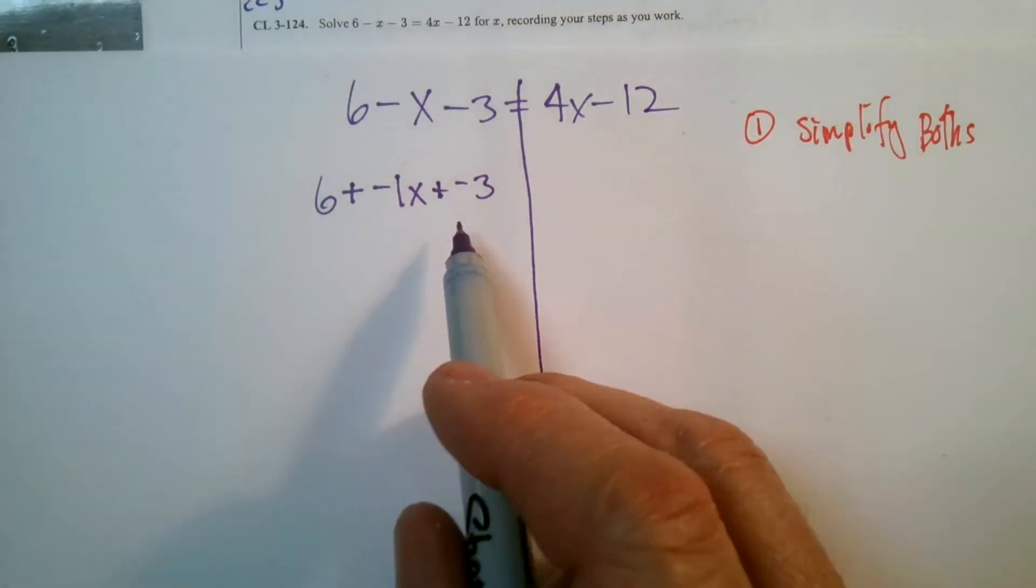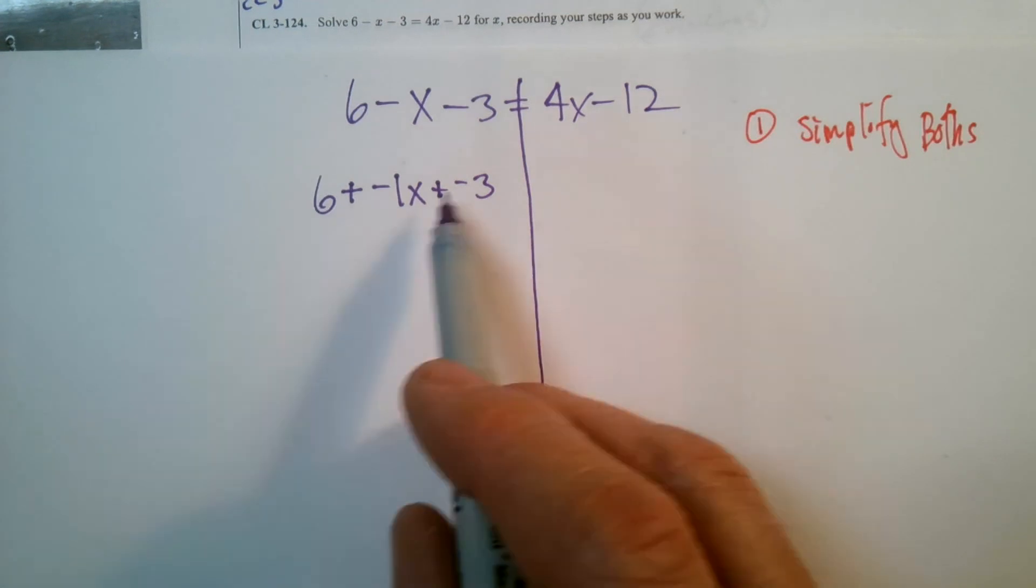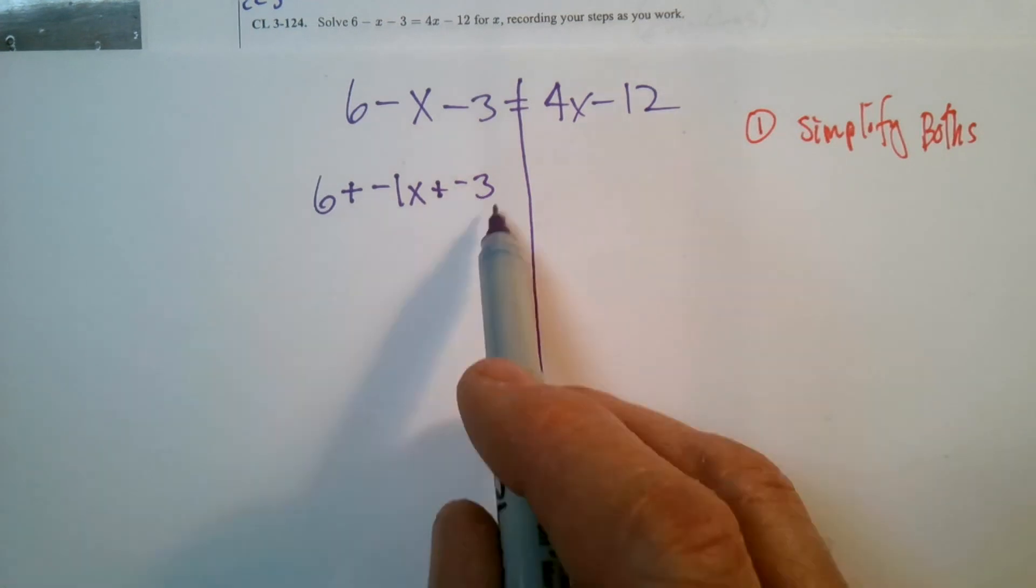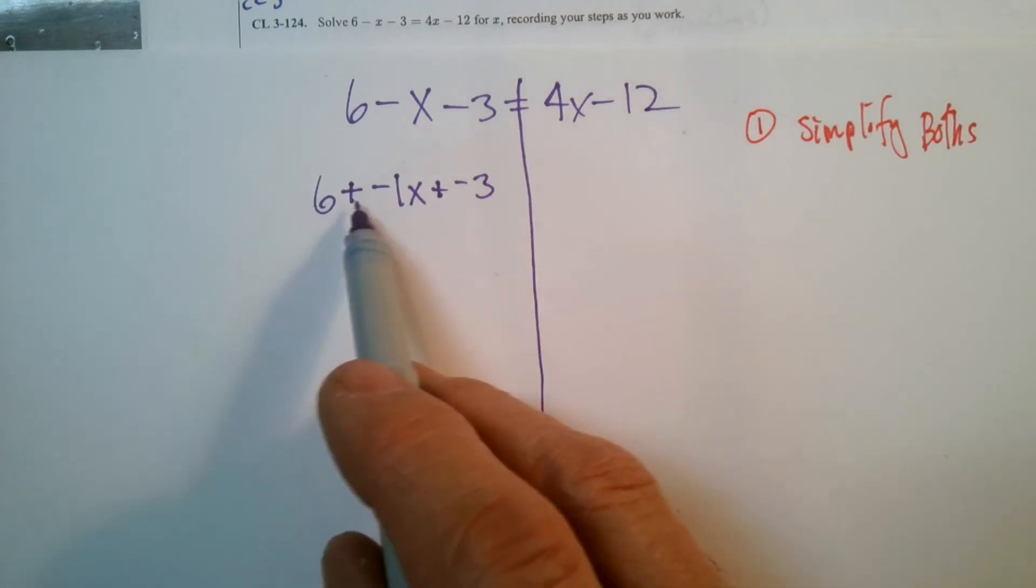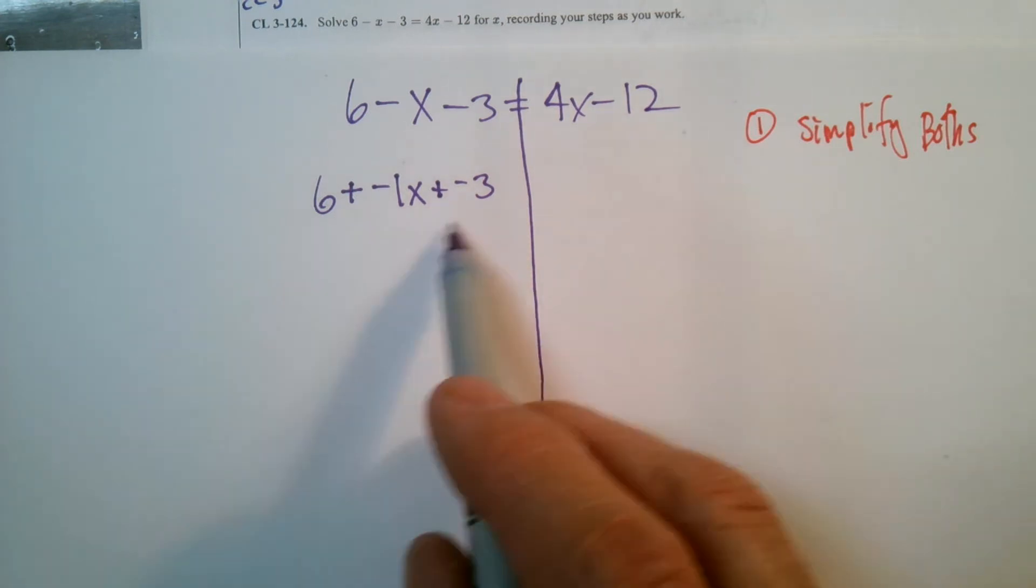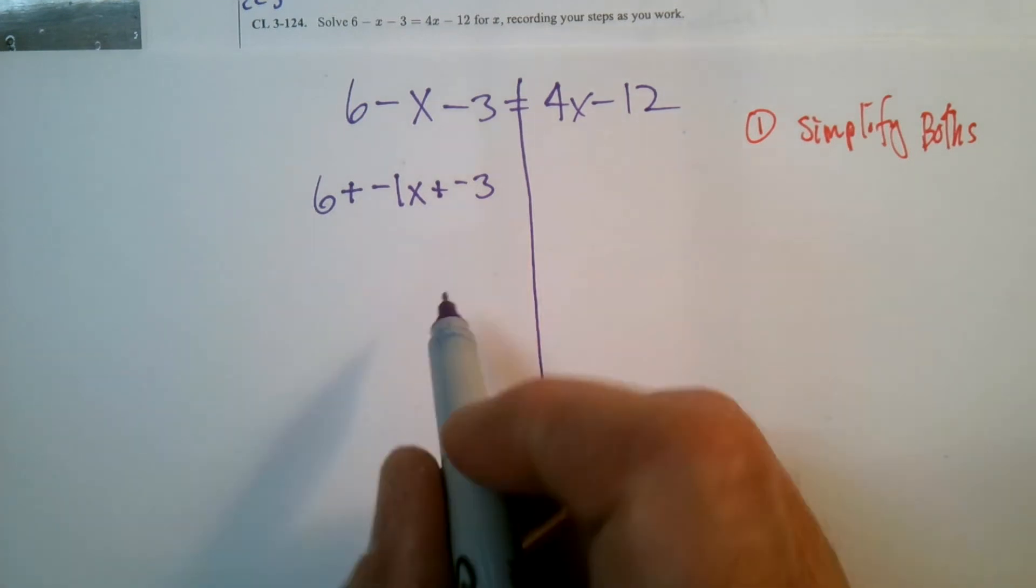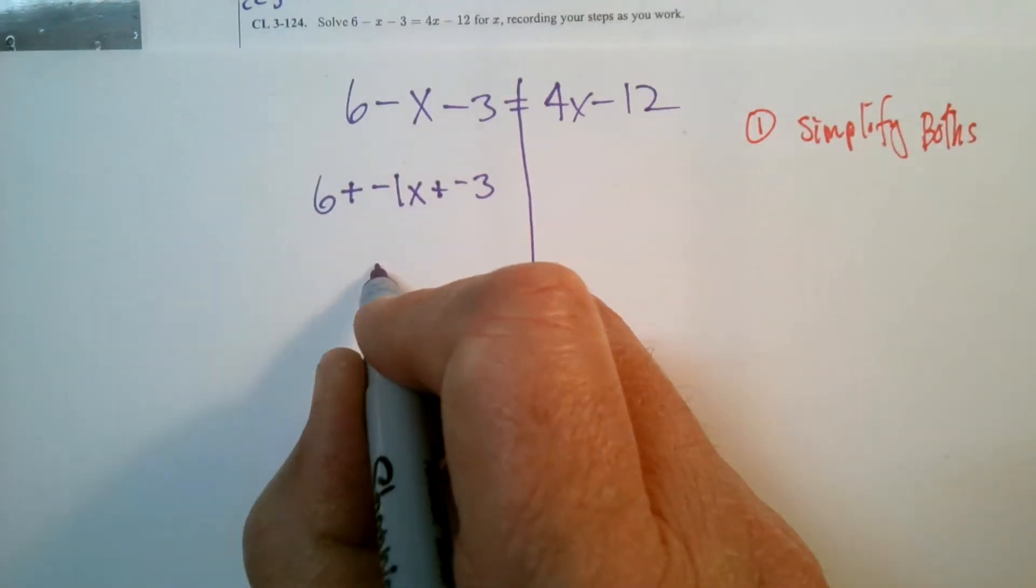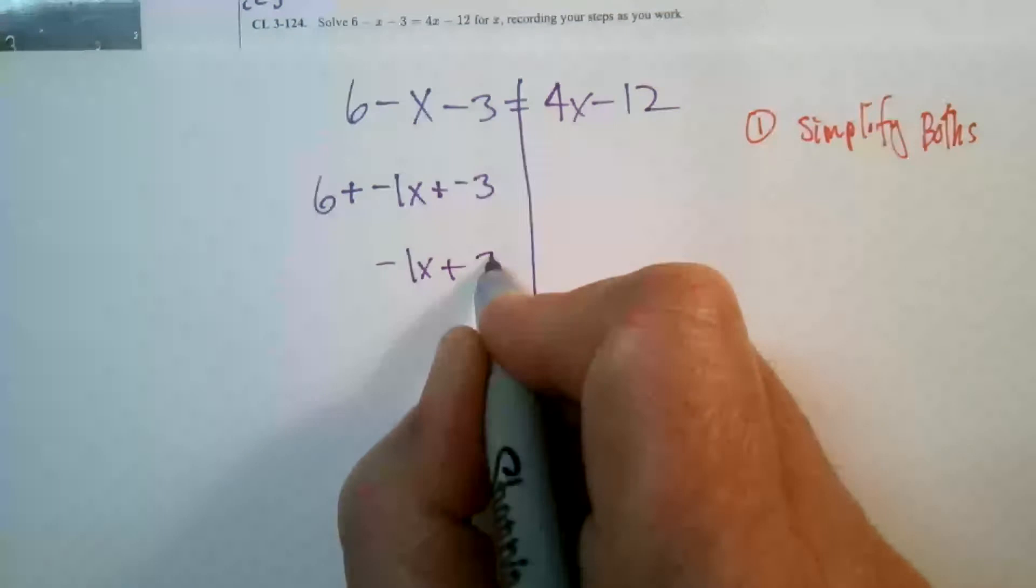So now combining like terms, I look and see I've got a 6 and a negative 3. So those can combine. Now that I've got addition in between all my terms, it's easier to use the associative property to add like terms. So 6 and negative 3 is a positive 3. So I have negative 1X plus 3.